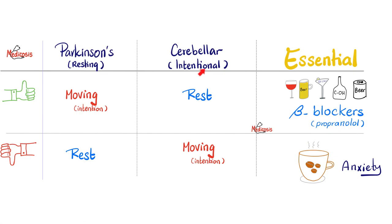Cerebellar tremor is an intention tremor, which means the tremor occurs during intention but disappears when I'm resting and doing nothing. Essential tremors will get better with alcohol or beta blockers, and they get worse with caffeine or anxiety.